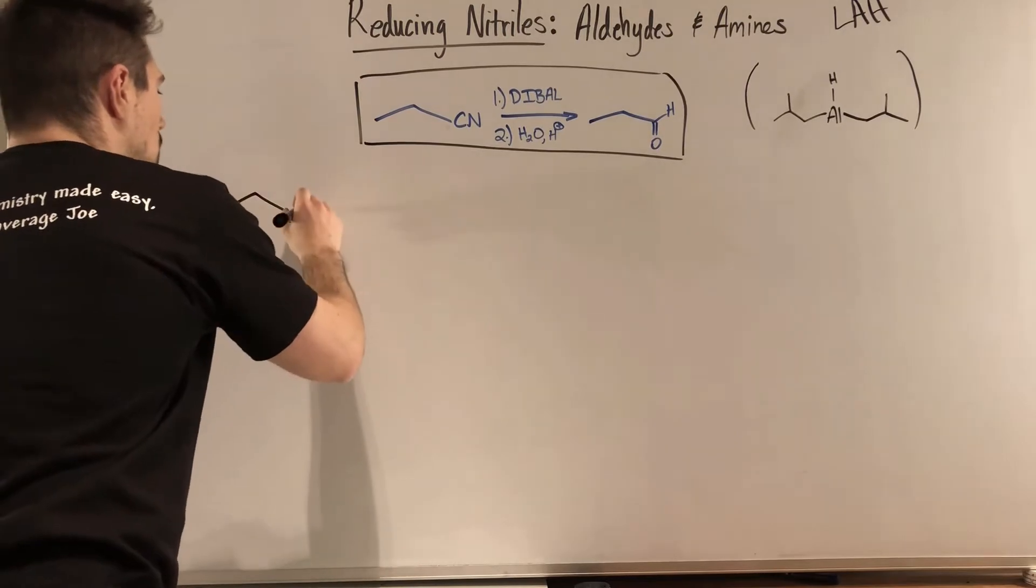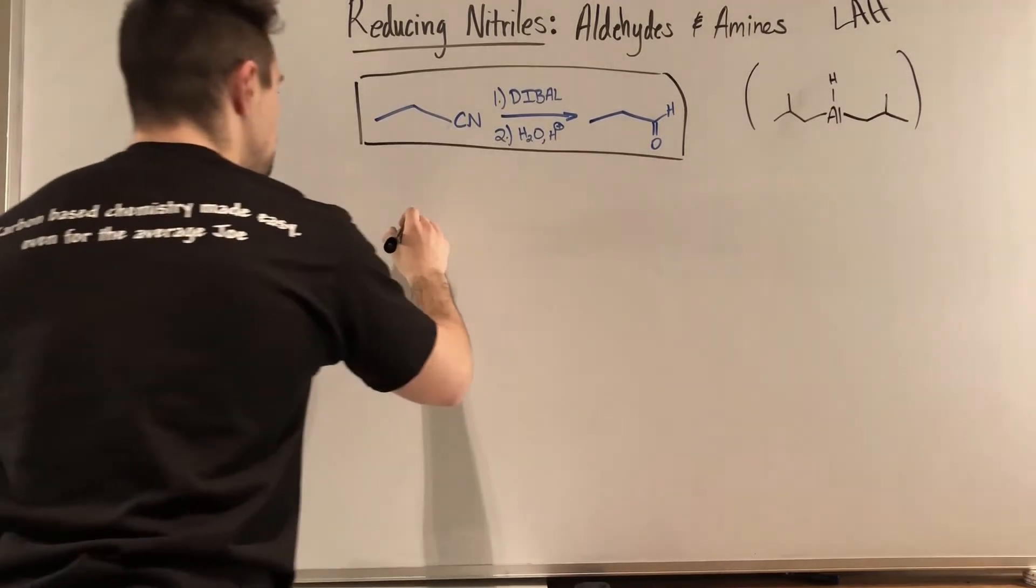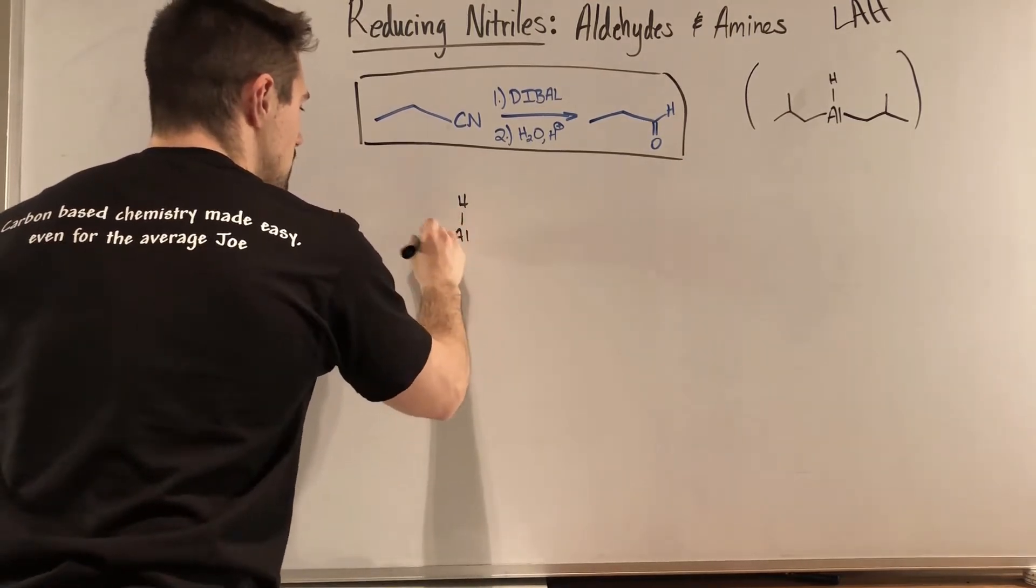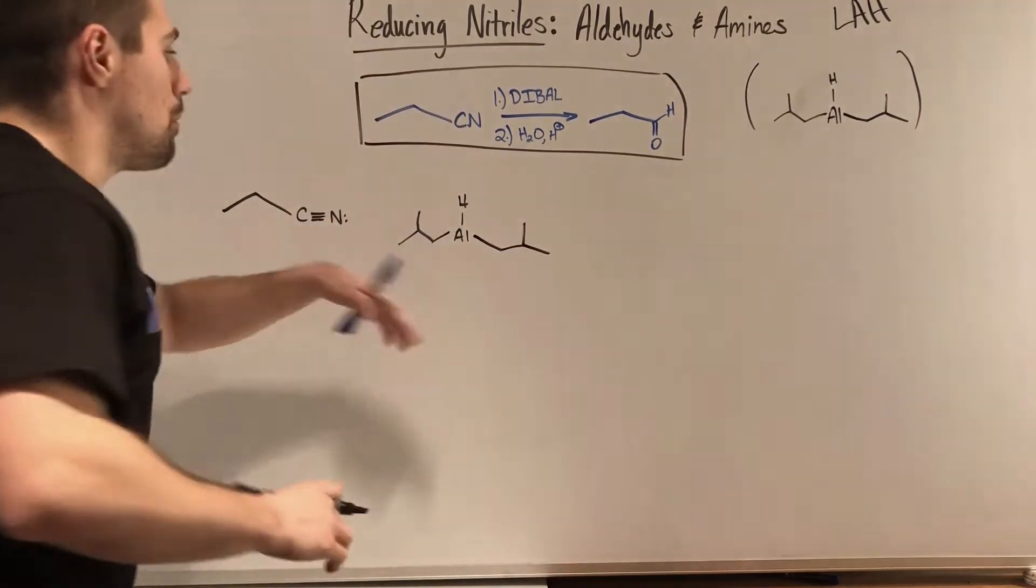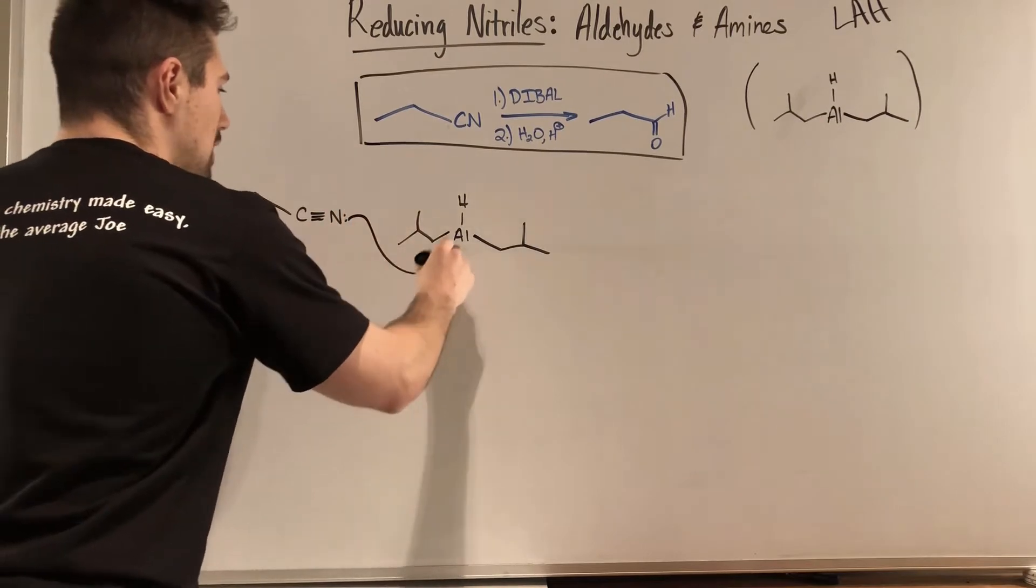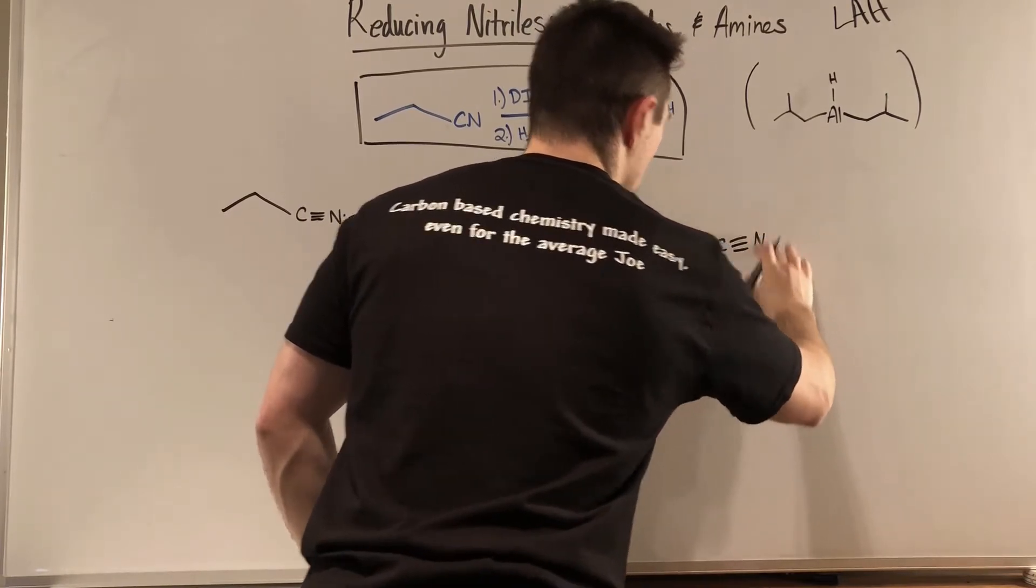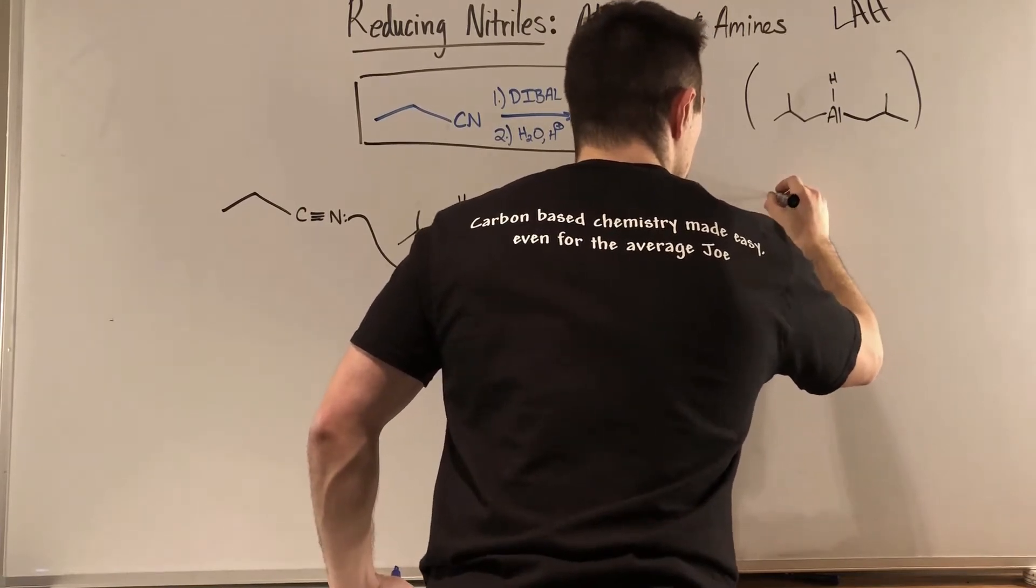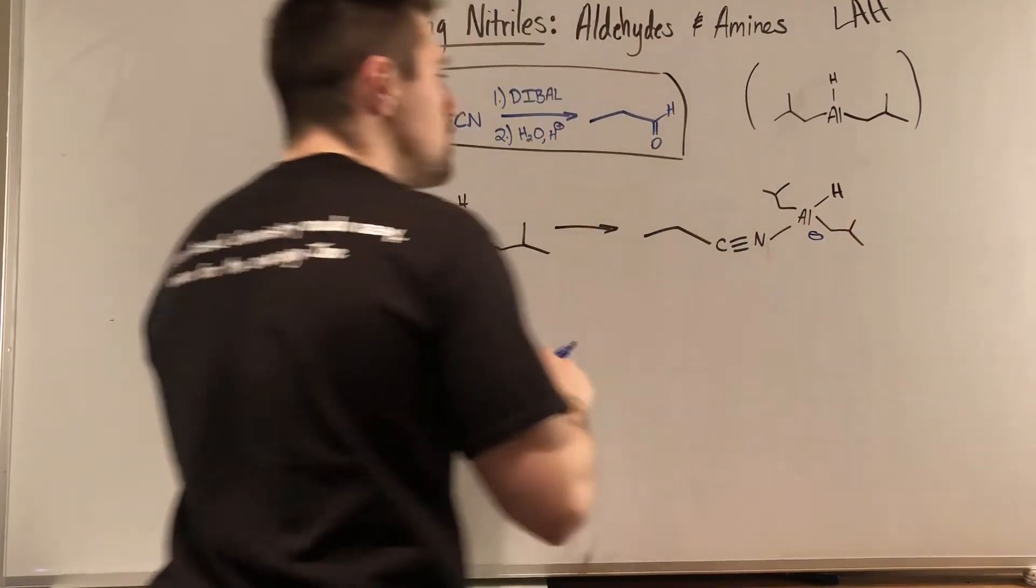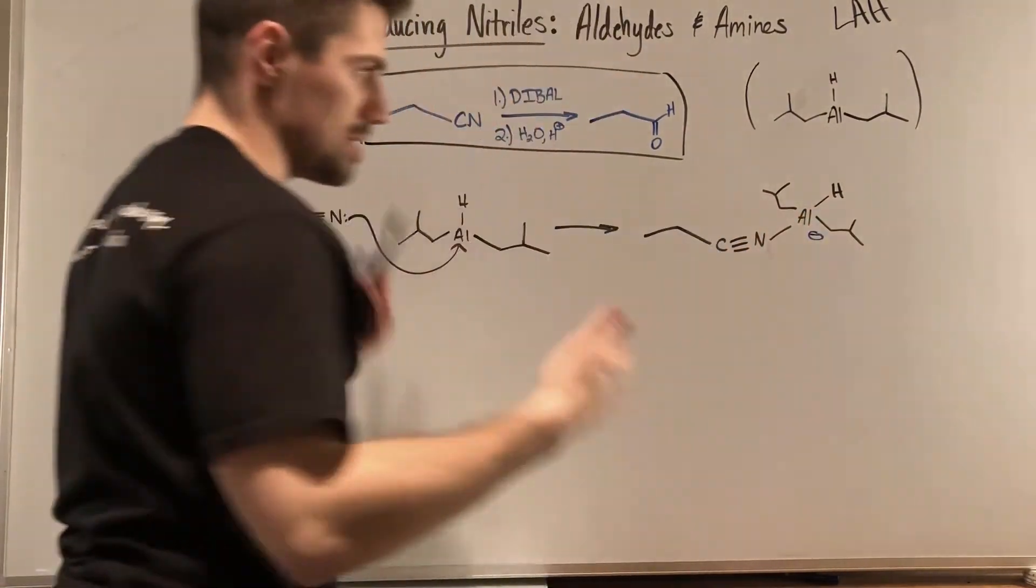So let's go ahead and do the mechanism. So to start off, weirdly enough, we will need to actually draw this out. So I'm gonna actually show the bonds here because we're gonna need to manipulate these. Aluminum. So this aluminum only has three bonds, right? So it is perfect to accept an electron pair. So our very first step that we're going to do is the nitrogen is going to attack right there.